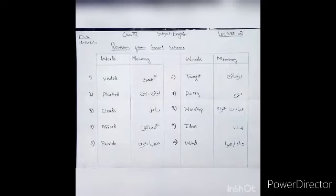Number seventh word is fluffy. Its meaning is naram. Means soft.